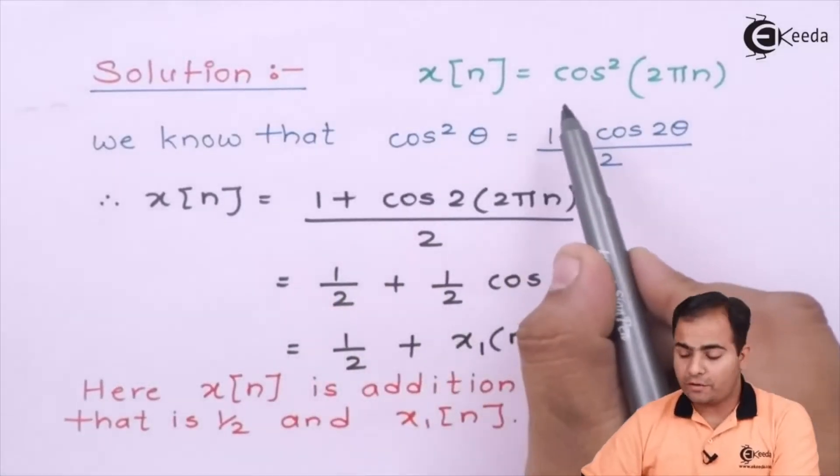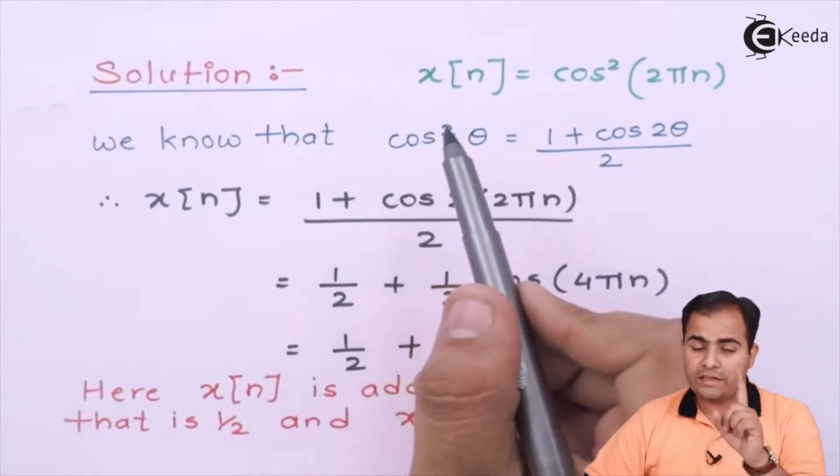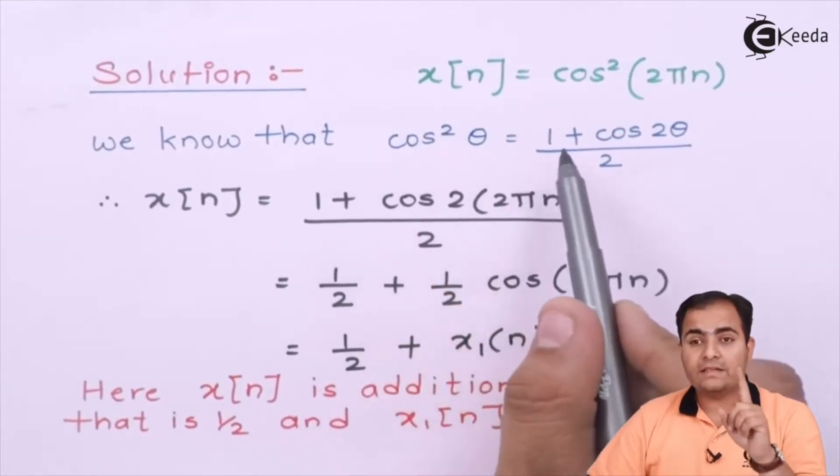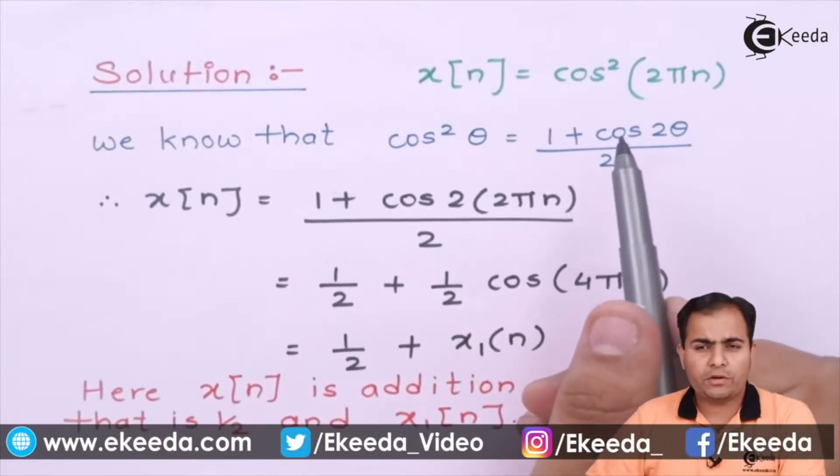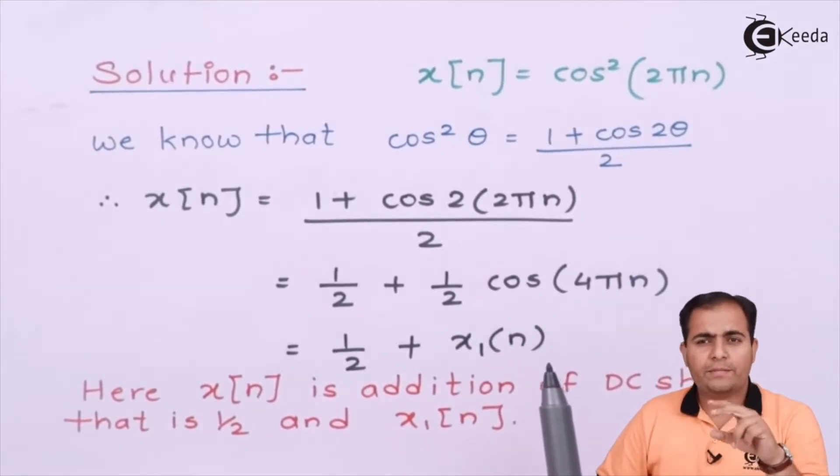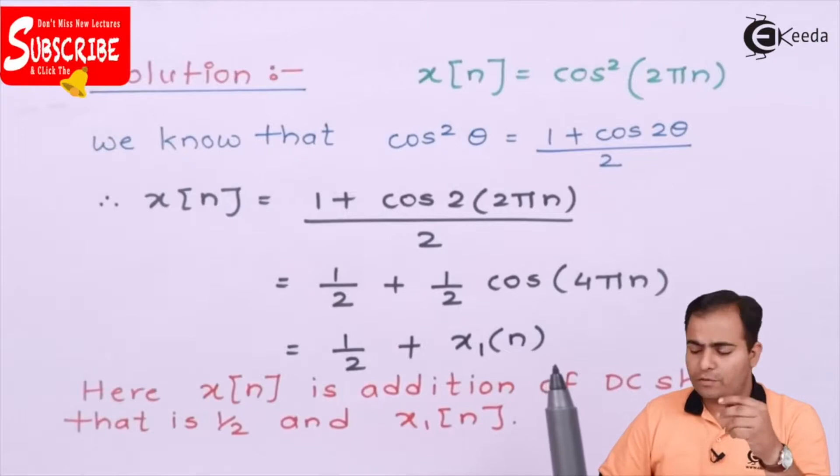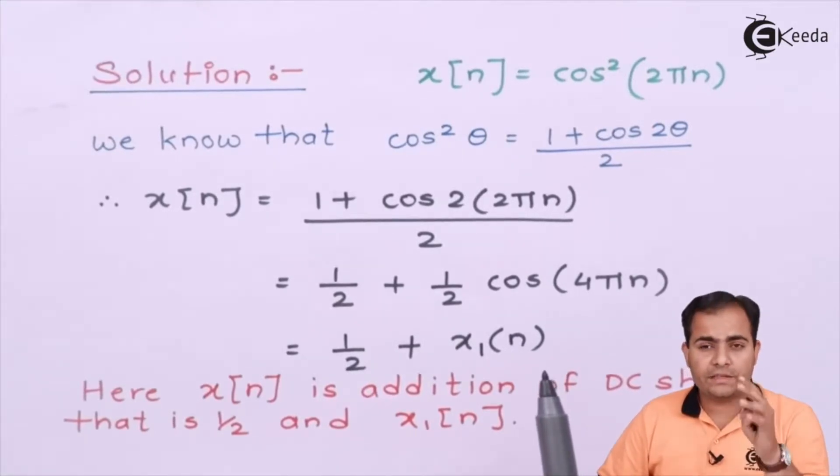The cos²θ formula is (1 + cos 2θ)/2 and the sin²θ formula is (1 - cos 2θ)/2. You should know the basic formulas related to cos and sine. It is necessary while solving numericals related to energy, power, periodic or non-periodic signals, or if numericals are encountered in Laplace transform, z-transform, and Fourier series.